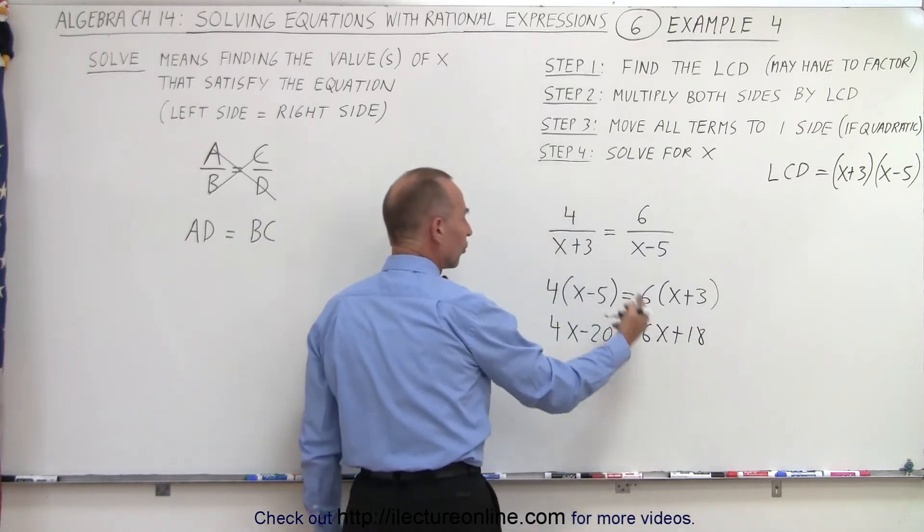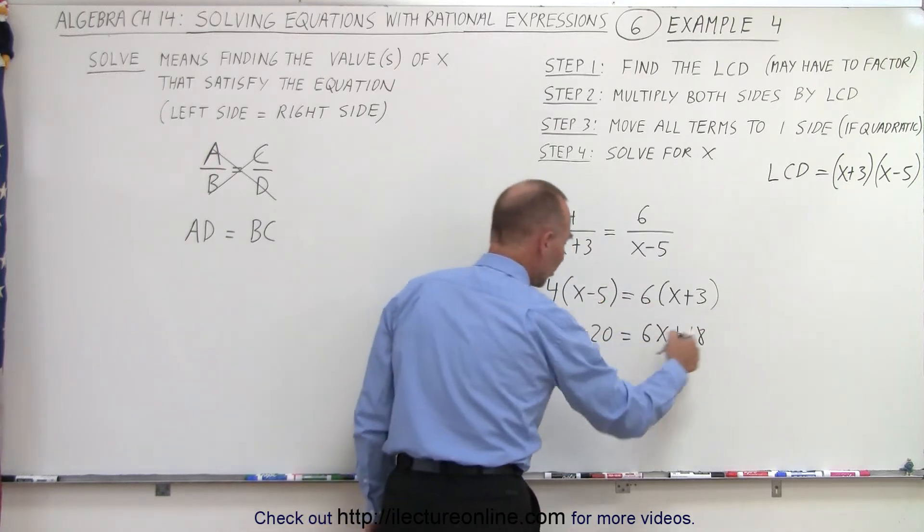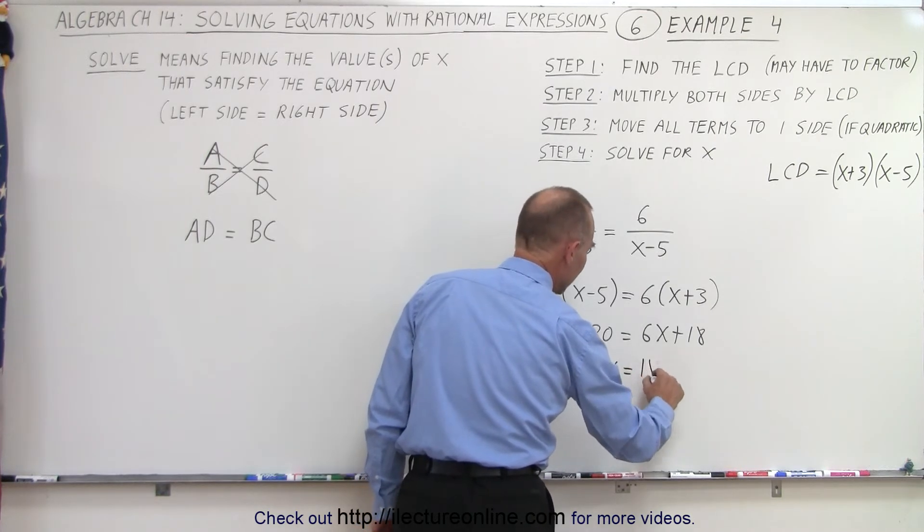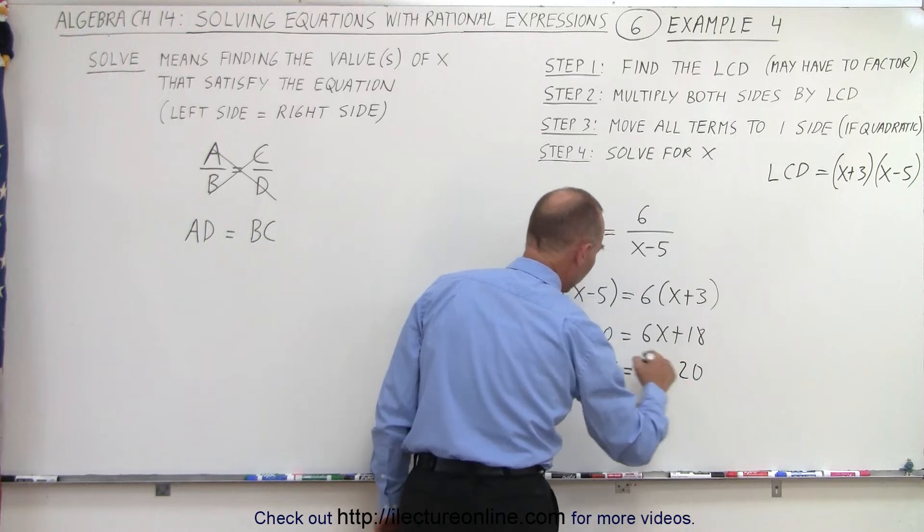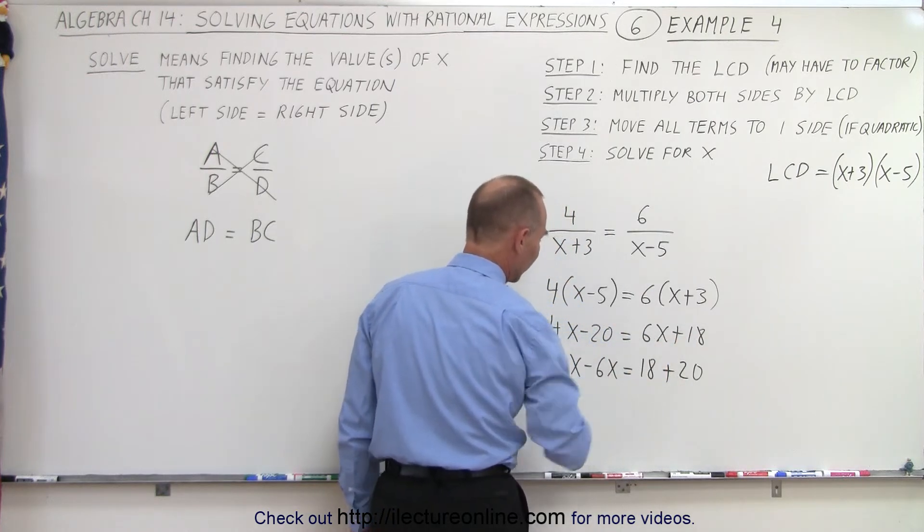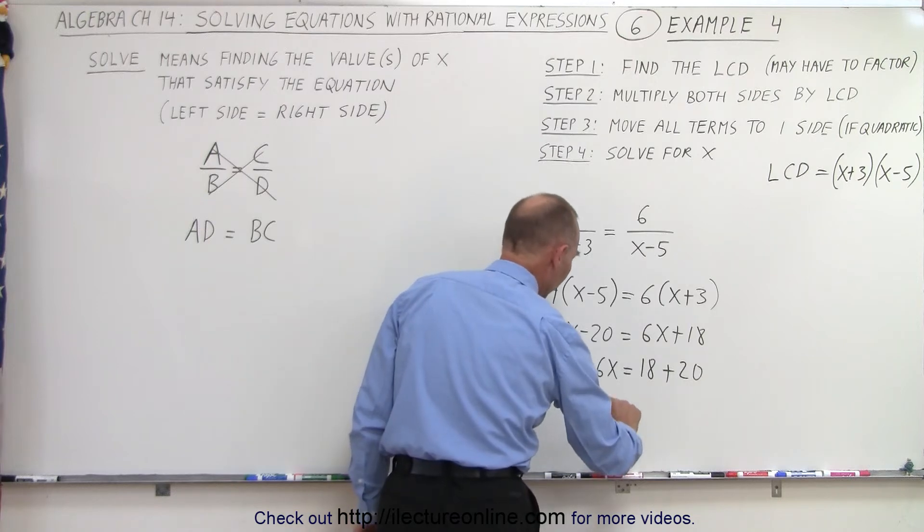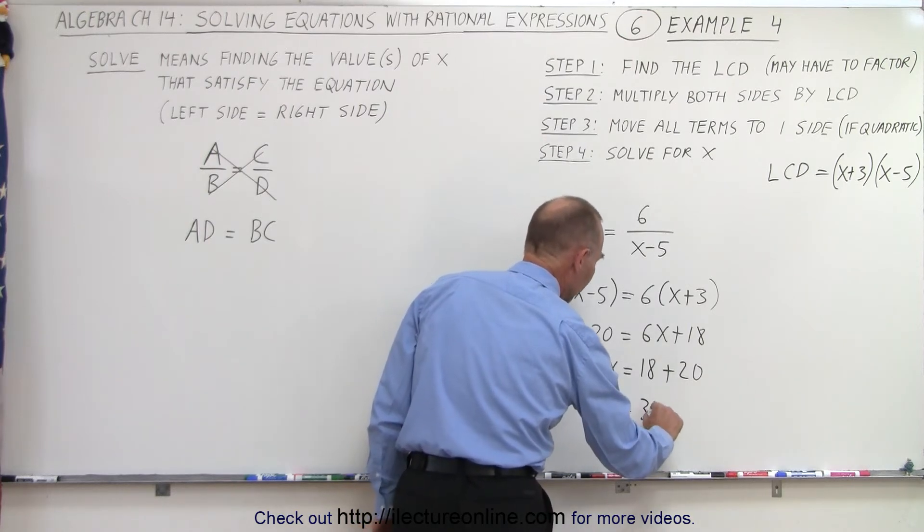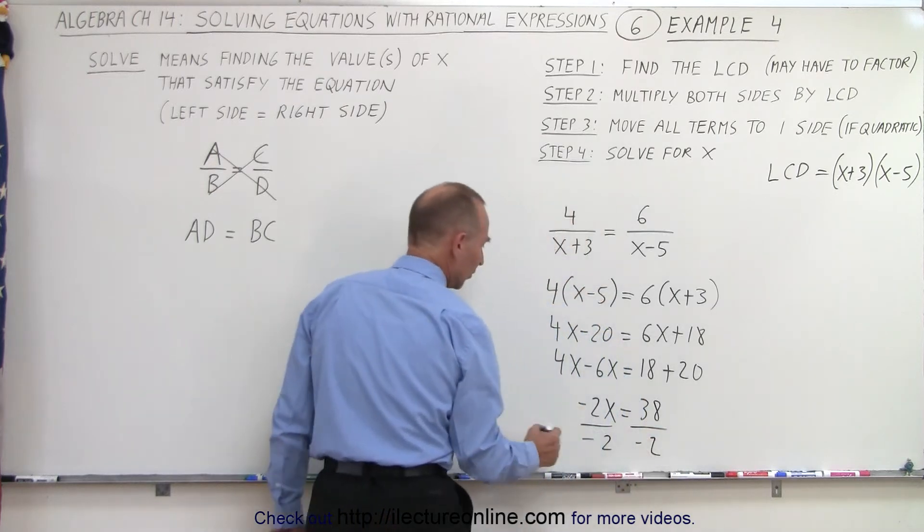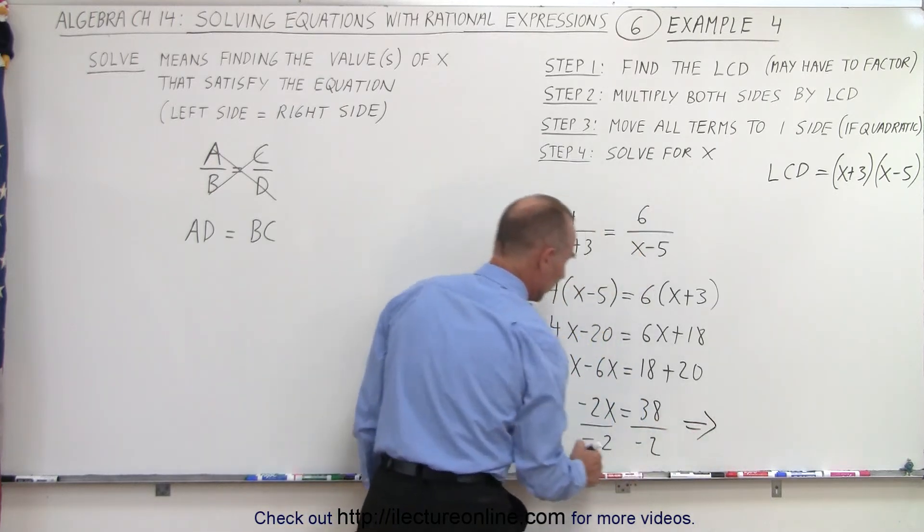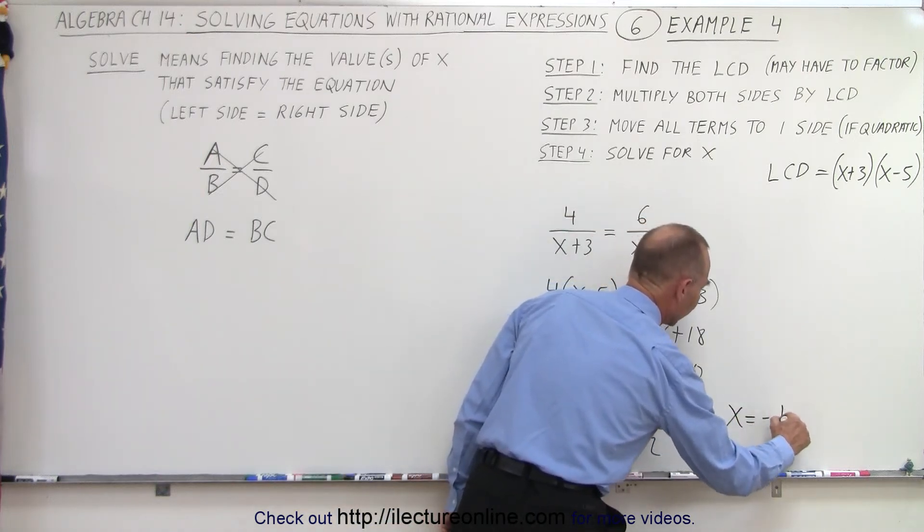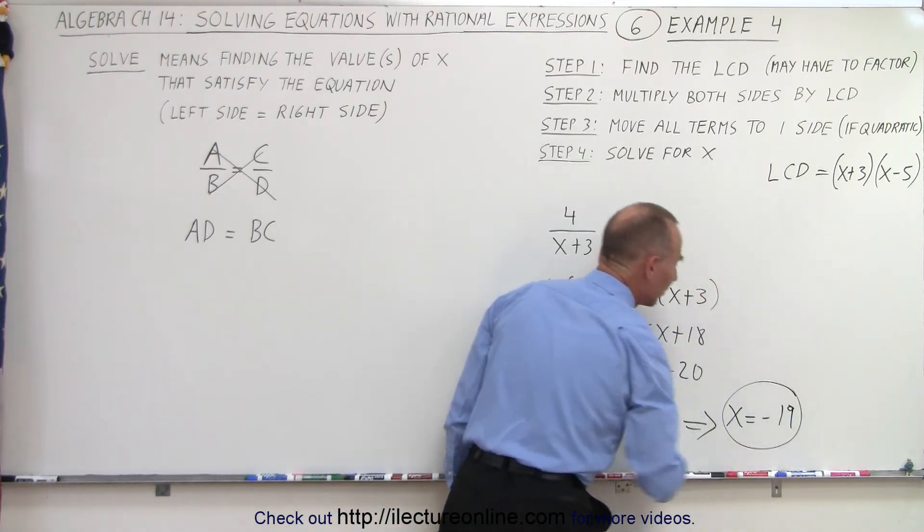We now move all the terms to one side, all the numbers to the other side. 4x minus 6x is equal to 18 plus 20. Notice that negative 20 becomes positive 20. The positive 6x becomes a negative 6x. Minus 2x equals 38. Divide both sides by negative 2. And then you can see that that cancels out, and we're left with x equals negative 19 as the solution.